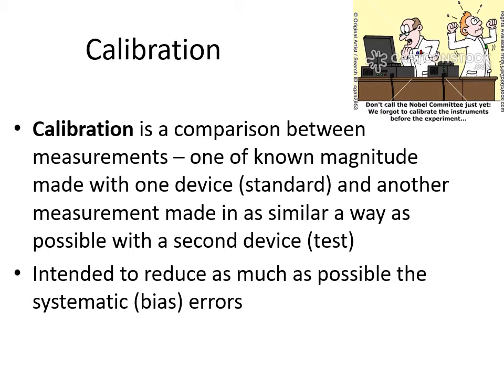Calibration is a comparison between measurements: a known magnitude measured with one device — the standard — and another measurement made as similarly as possible with a second device. We send sensors back to Campbell Scientific regularly to get recalibrated. The goal is to reduce systematic bias-type errors as much as possible. It won't remove random errors, since it's through multiple measurements that you compare the standard against the second device.